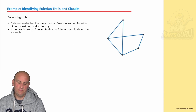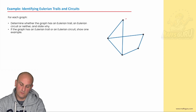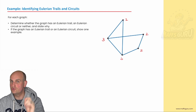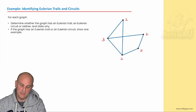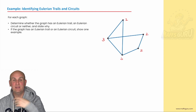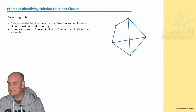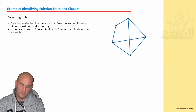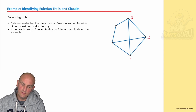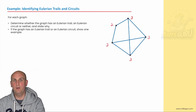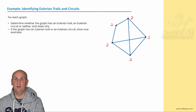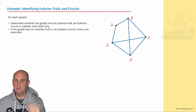Next example: determine whether the graph has an Eulerian trail, an Eulerian circuit, or neither, and state why. The degrees are 2, 2, 2, 3, and 3. This will have an Eulerian trail. Why is it not an Eulerian circuit? Because it has just two odd vertices. So I'm going to start at one vertex of degree 3 and end at the other — because I'm not going back to where I started, it can't be a circuit. Last one: degrees are 3, 3, 3, 3, and 2. Are they all even? No. Is there just two odd? No. So that is neither — you're not going to be able to get around that one by doing all the edges just once.